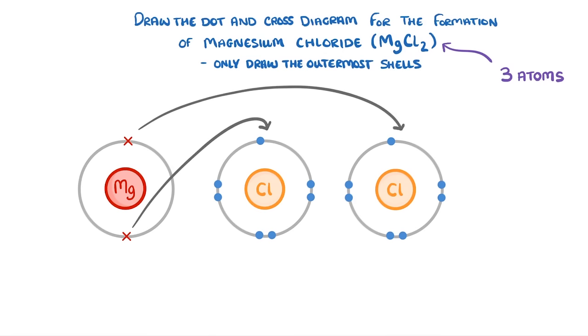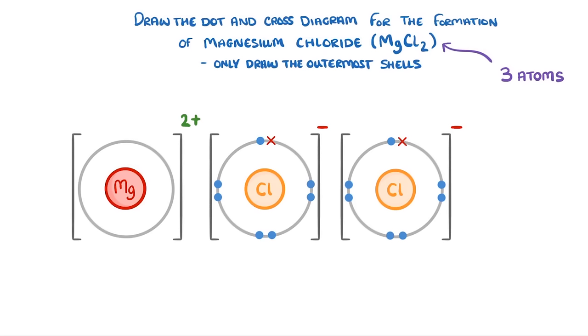As a result we'll end up with a magnesium two plus ion and two chloride one minus ions. This is now pretty much done however in dot and cross diagrams involving more than two ions we generally arrange the ions like they would be arranged in a real compound.